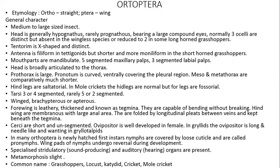Insects of Orthoptera are winged, brachypterous, or apterous. Forewings are leathery, thickened, and known as tegmina — capable of bending without breaking. Hindwings are membranous with a large anal area. Hindwings are folded between the wings and kept beneath the tegmina, which protect them.